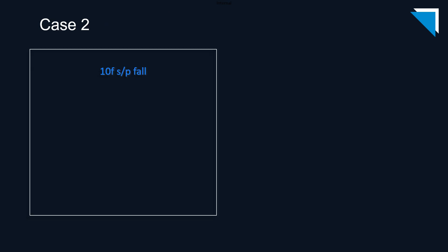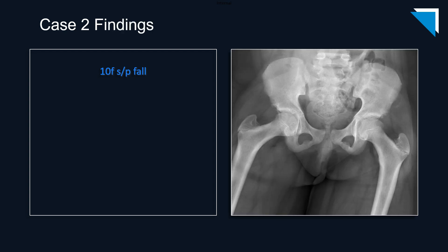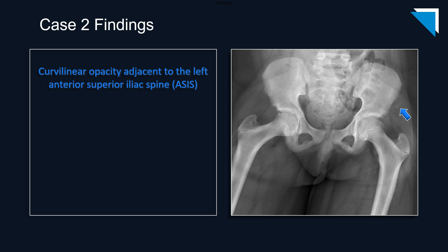Our next patient is a 10-year-old girl status post fall. Only one image for this case — this is an AP radiograph of the pelvis. There is a subtle curvilinear opacity abutting the left anterior superior iliac spine, which is consistent with an avulsion fracture.